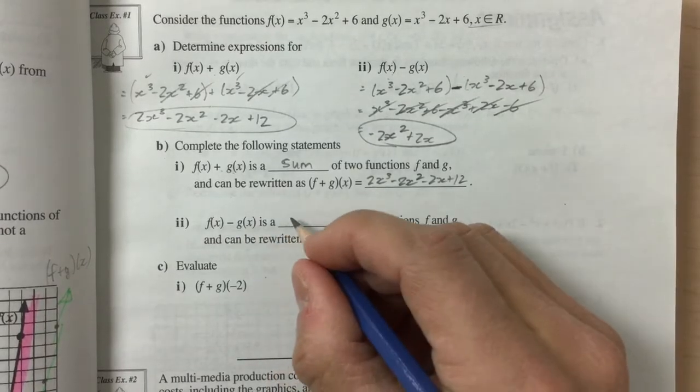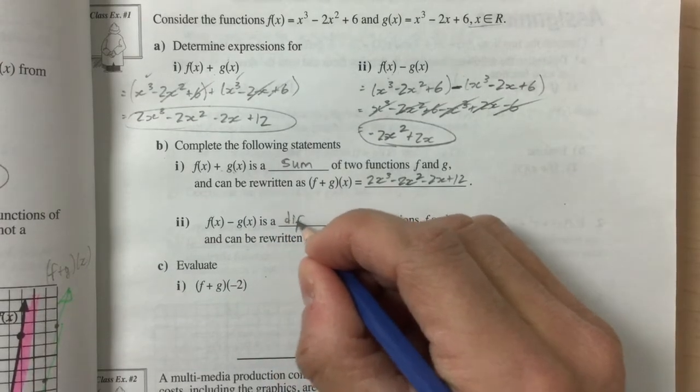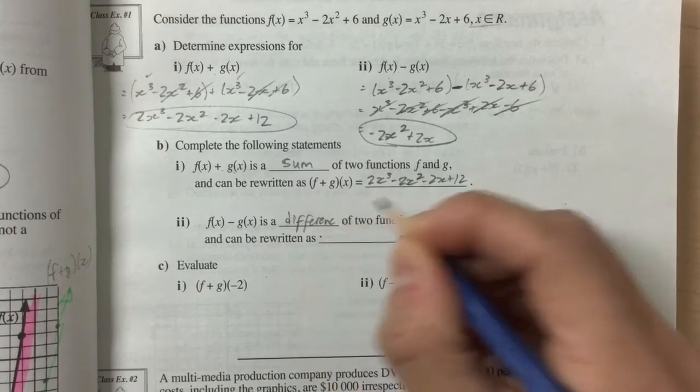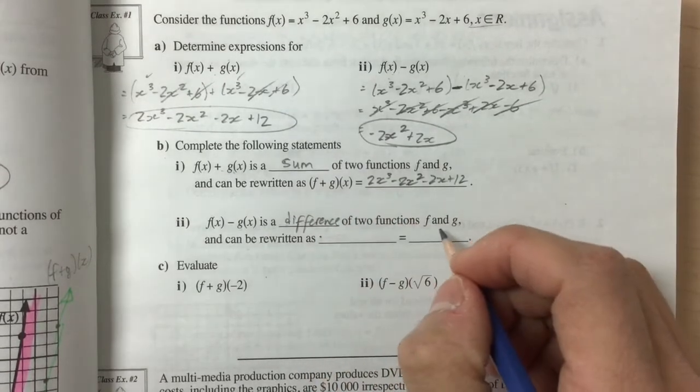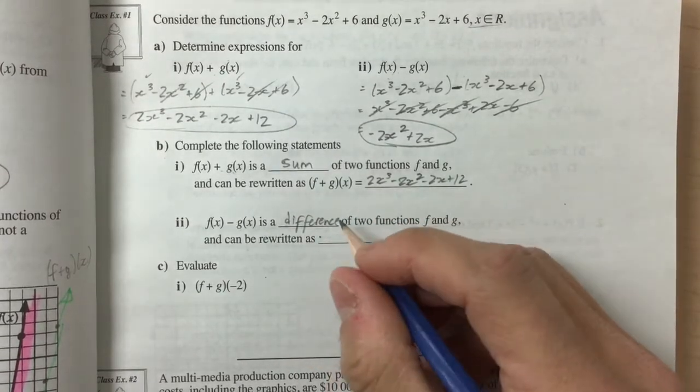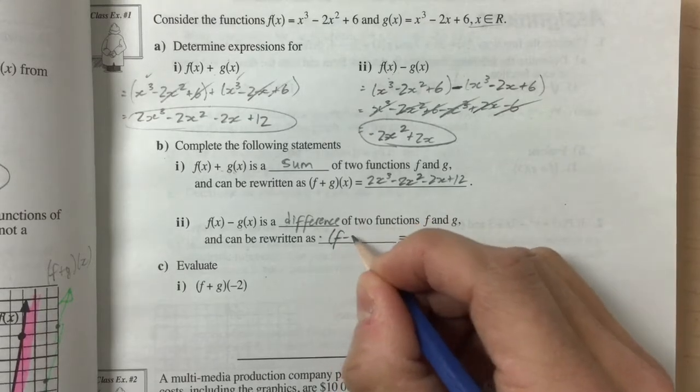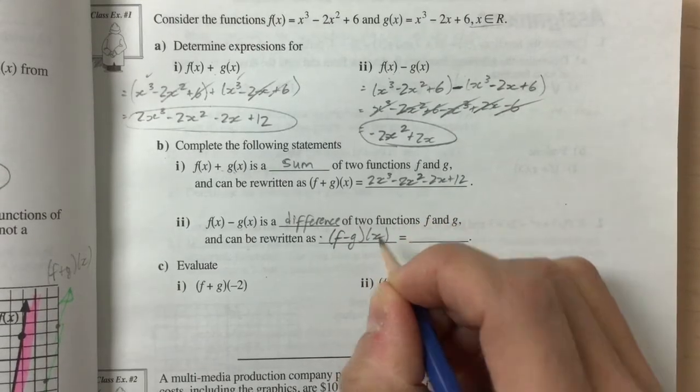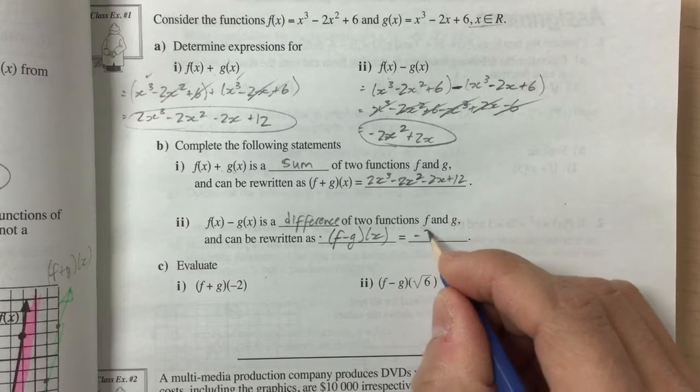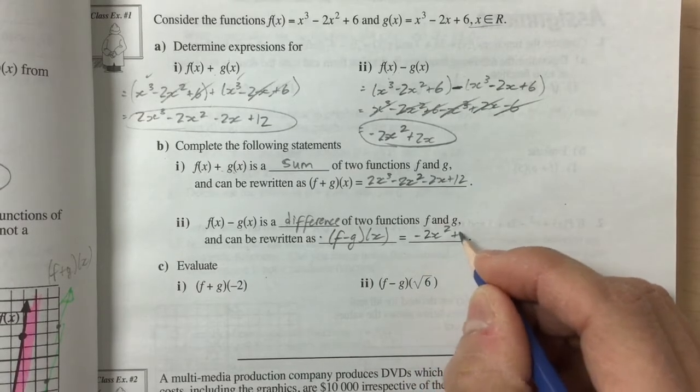f minus g of x is a difference of two functions, f and g, and it can be written as f minus g of x, and that is equal to negative 2x squared plus 2x.